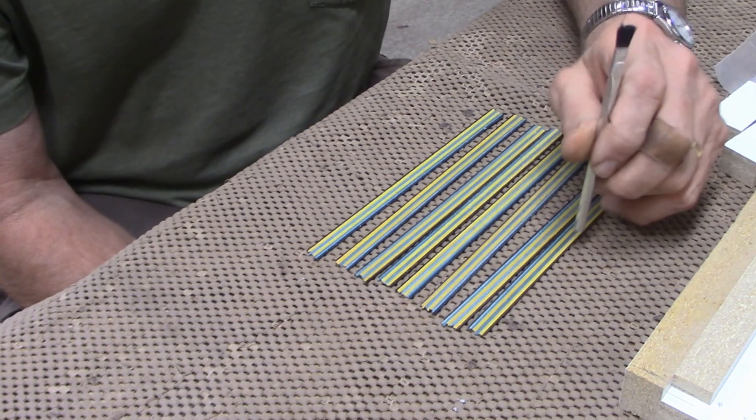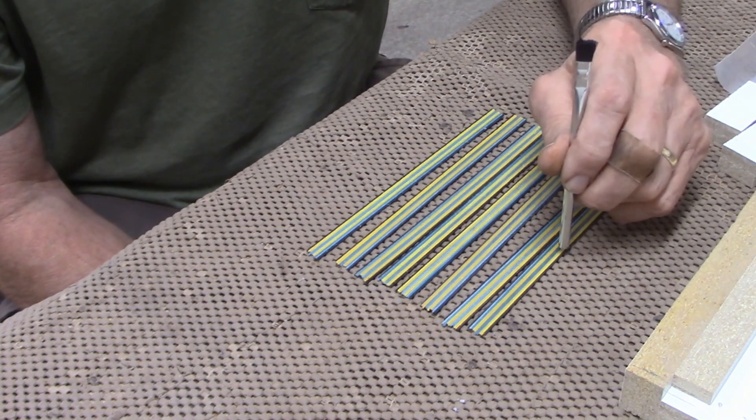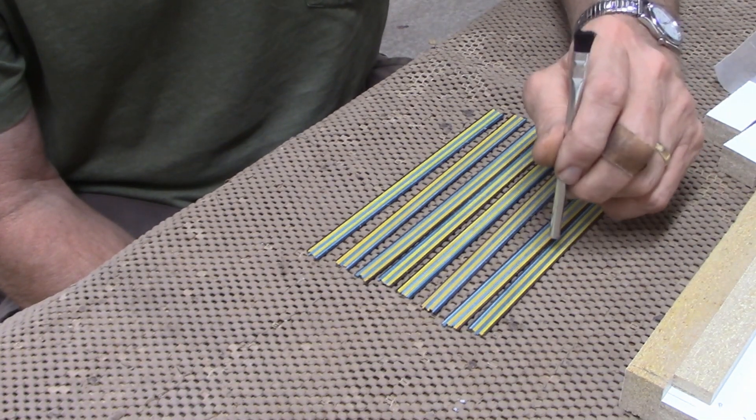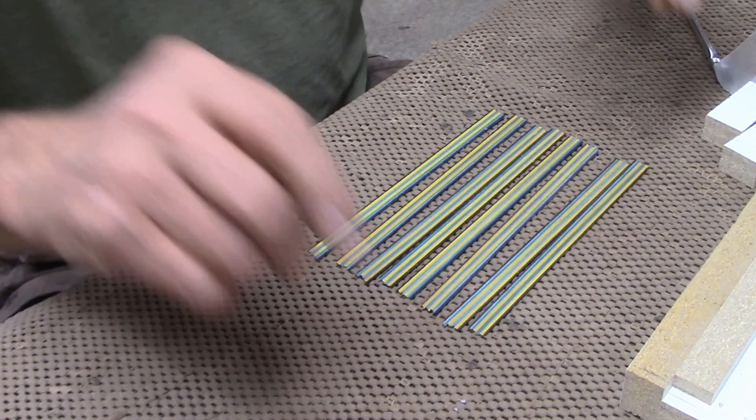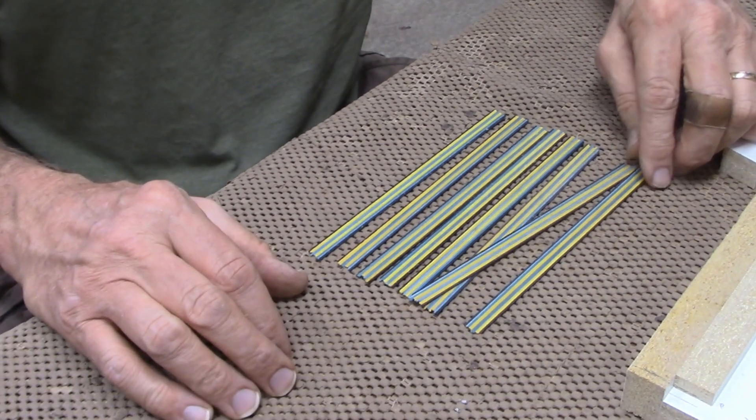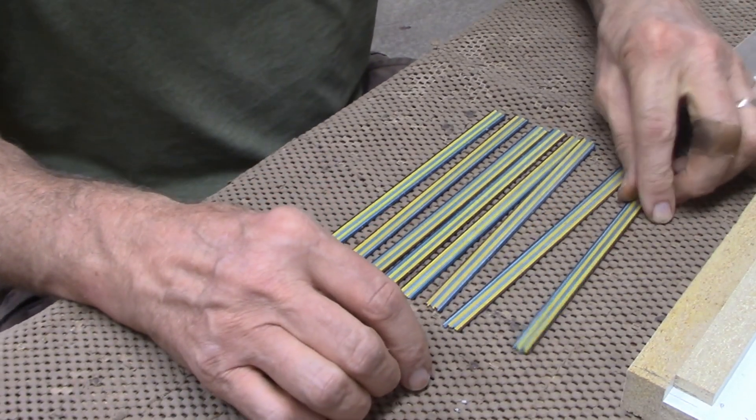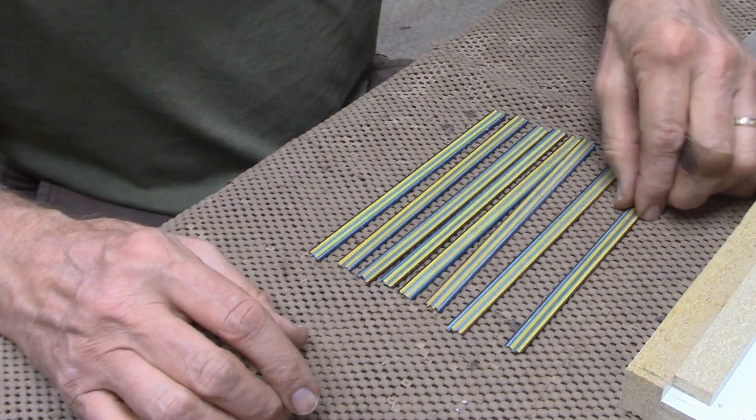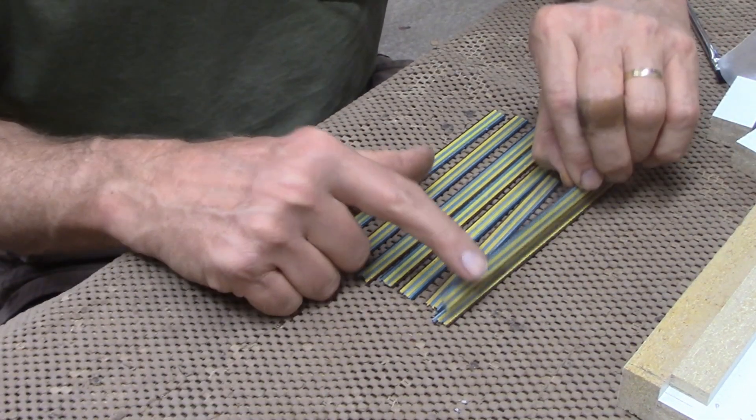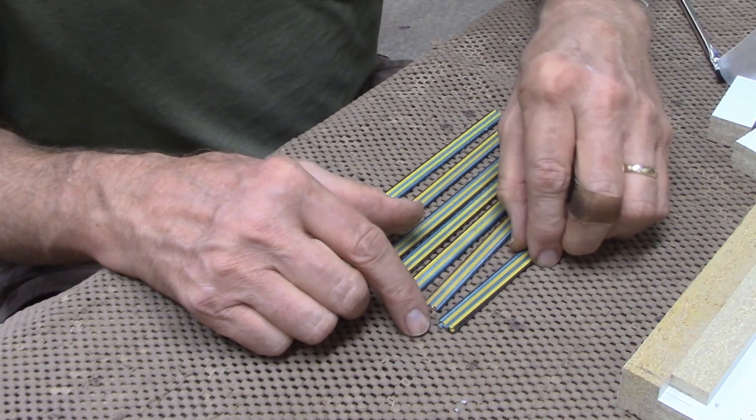Followed by two yellow sticks, then two blue, two more yellow, two more blue. Now I'm going to glue these up into one big block. The way I'm going to alternate this, there will be two identical pieces together.